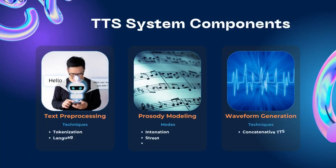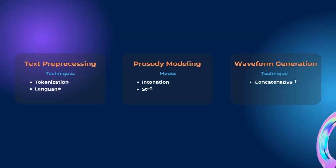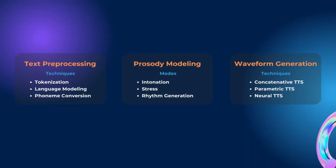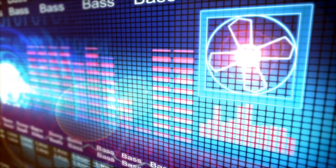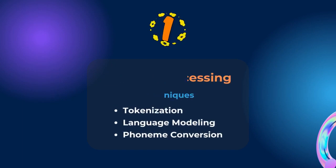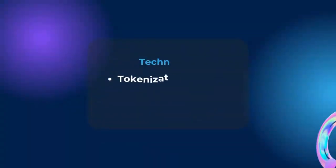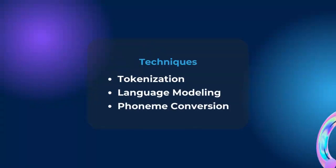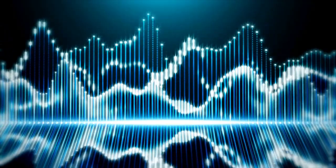Overview of TTS system components. These TTS systems are made possible by a number of processes that help convert the input text to generate natural-sounding speech. Basically, there are three primary components of TTS systems: text preprocessing, prosody modeling, and waveform generation. The three components work collaboratively to produce high-quality synthesized speech. The first component is text preprocessing — the initial stage involving the analysis and processing of the input text. To achieve this, it applies techniques such as tokenization, language modeling, and phoneme conversion, to break down the text into smaller units that the TTS system can process efficiently.